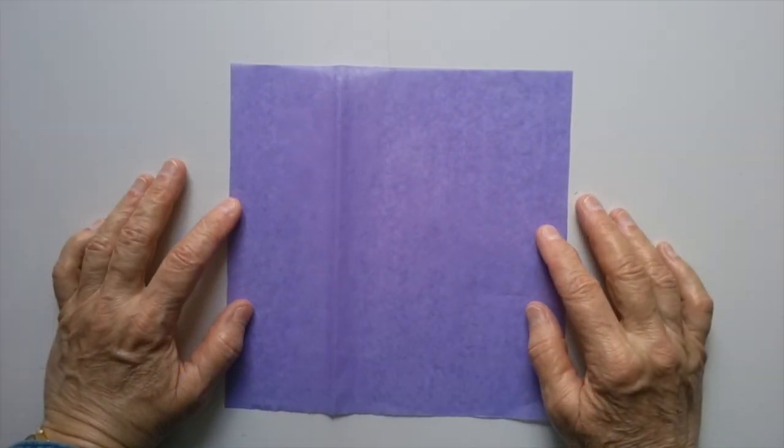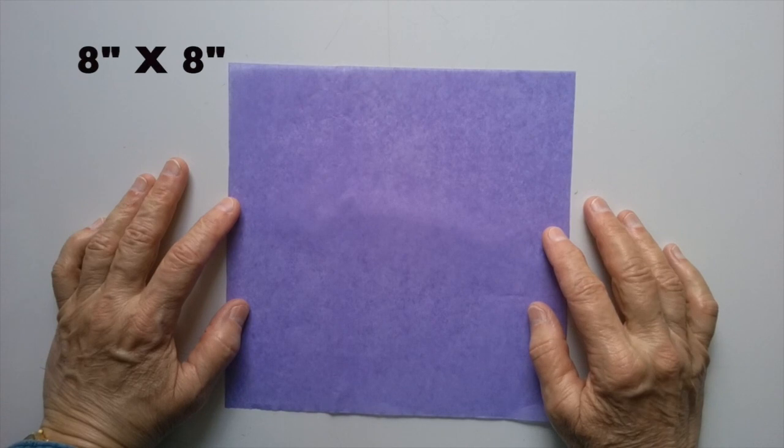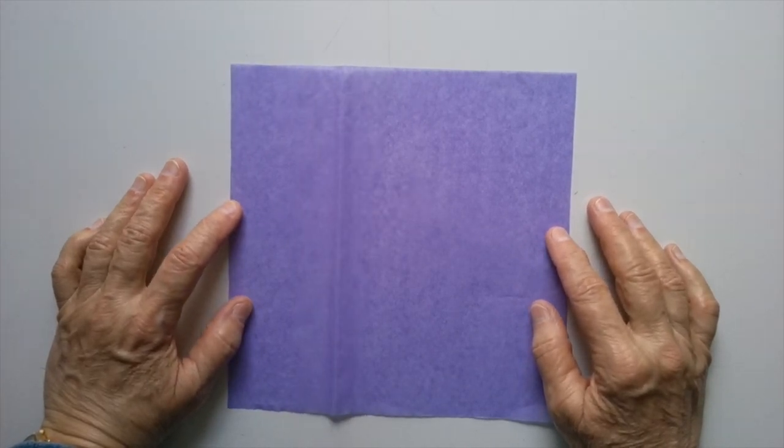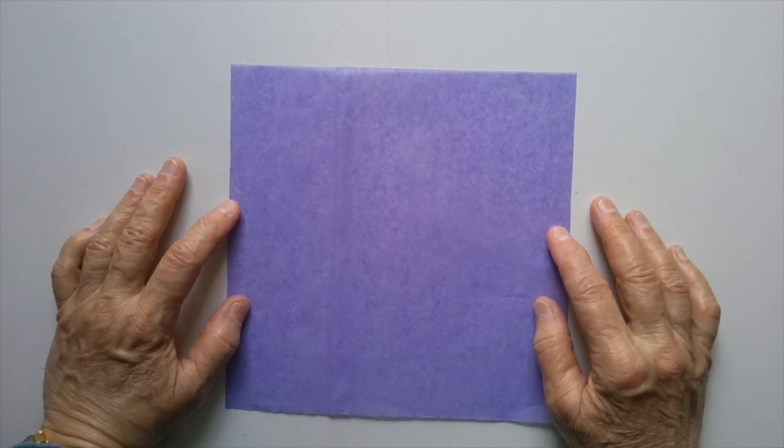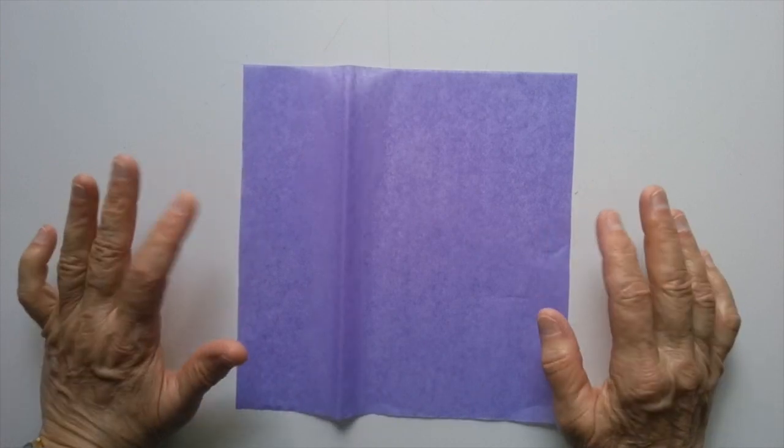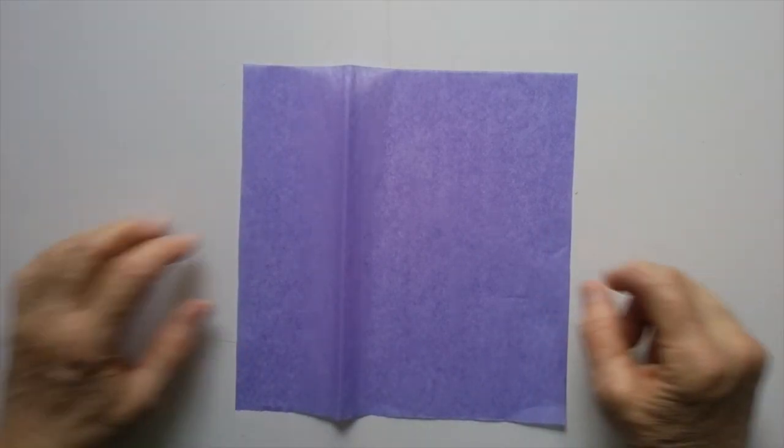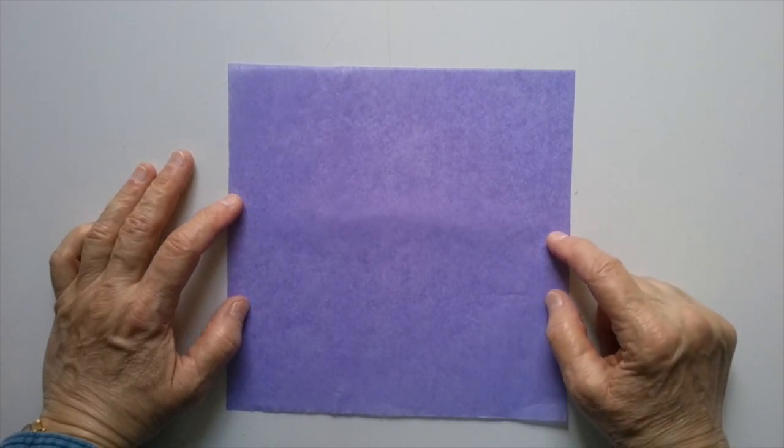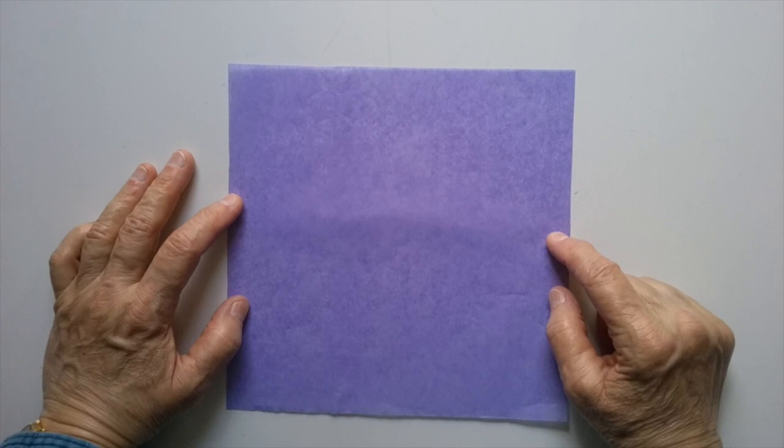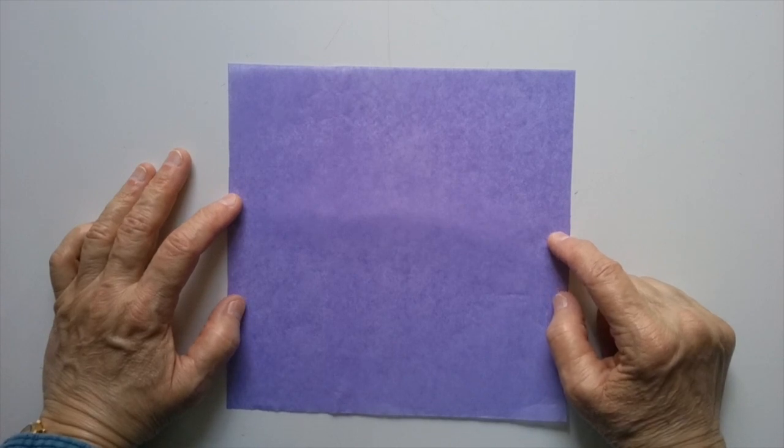We're going to start with a square of tissue paper, 8 inches by 8 inches. Waldorf stars are typically made with kite paper, which is a little bit heavier. It's coated on both sides and holds the color better in the sun. Since most people don't have kite paper in the house, we're going to use tissue paper. It's a little more fragile, and it will fade in the sun. But I will put links to sources of kite paper in the description of the video. So if you want to invest in that, you may.